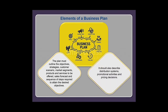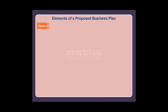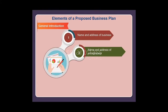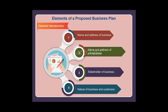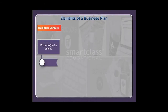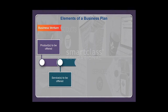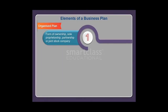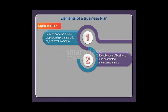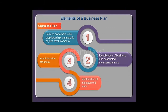The plan should also describe distribution systems, promotional activities, and pricing decisions. The important elements of a proposed business plan include: general introduction covering name and address of business, name and address of entrepreneur, stakeholders, nature of business and customers. The business venture section covers products and services to be offered, scale of business operation, and type of technology and skilled personnel required. The organized plan covers form of ownership — sole proprietorship, partnership, or joint stock company — identification of business members or partners, administrative structure, and identification of the management team.